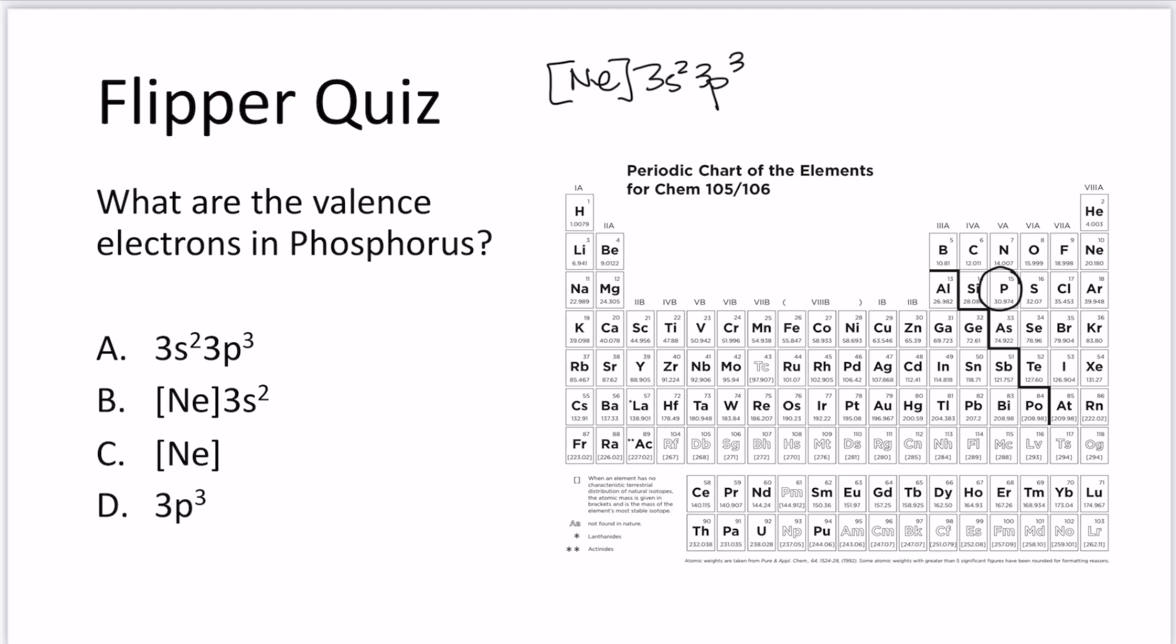If we write our abbreviated electron configuration, we'll have [Ne] and then 3s2 3p3. That would be our electron configuration, and these are all s and p electrons that we've written here that are in the highest principal quantum number, which is three, and so they all qualify as valence electrons. So A is the correct answer here.